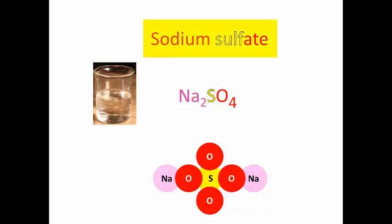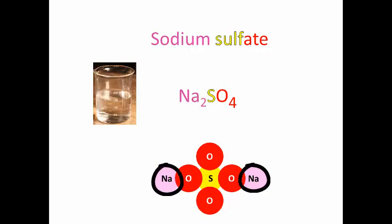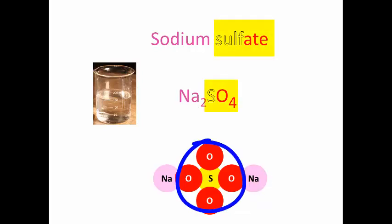Sodium sulfate is another example. The formula of sodium sulfate is Na2SO4 because you need two sodium atoms to bond with this group. There we have in the picture two sodium atoms and then the sulfate group, SO4.